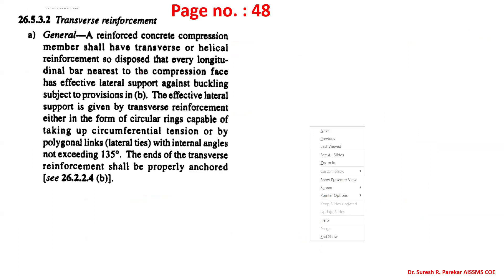For transverse reinforcement, the main purpose is to keep the bars straight, so that every longitudinal bar nearest to the compression face has effective lateral support against buckling. This effective lateral support is given by transverse reinforcement either in the form of circular rings capable of taking up circumferential tension, or polygonal links where the angle should not exceed 135 degrees, and the ends of the transverse reinforcement shall be properly anchored.